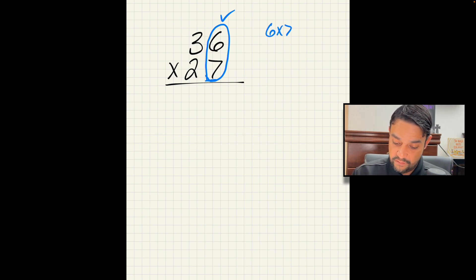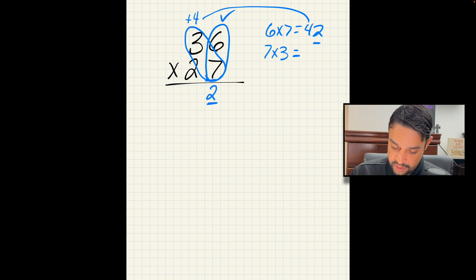6 times 7, well that's 42. But remember, we should only have an answer in the ones. What's in the ones? The 2. Now we're going to take our 4 and we're going to regroup it with the tens. Easy peasy. Now, 7 times 3, that's 21. But I can't forget my 4 plus 4, that's 25. Easy peasy, lemon squeezy.